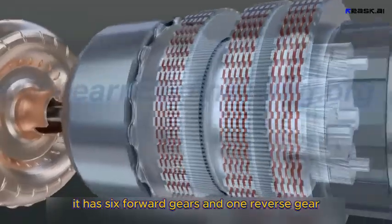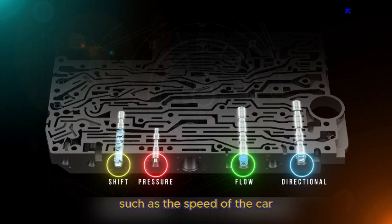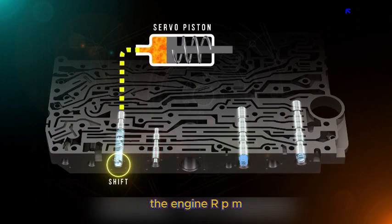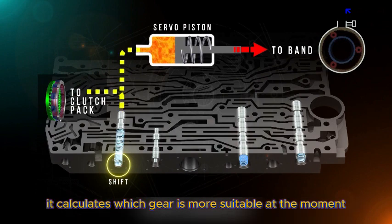It has six forward gears and one reverse gear. At the bottom is the chassis, in the middle is the transmission control module. It automatically collects information such as the speed of the car, the engine RPM, the throttle opening, etc. And then through the built-in algorithm, it calculates which gear is more suitable at the moment.